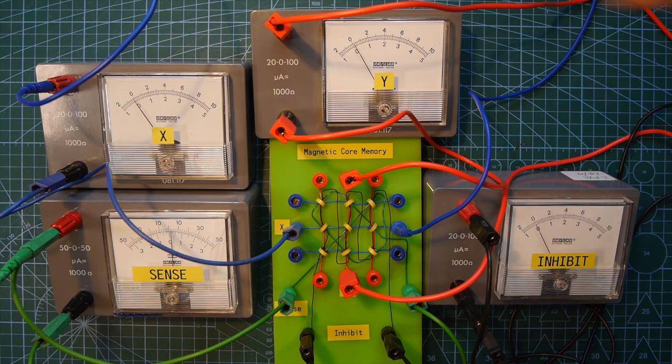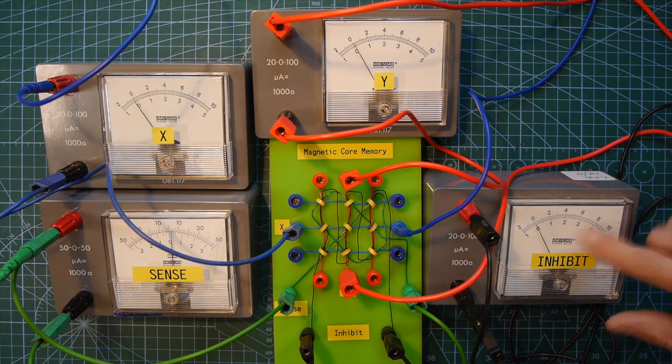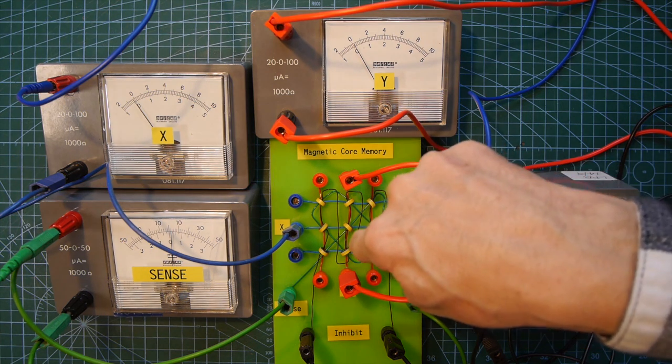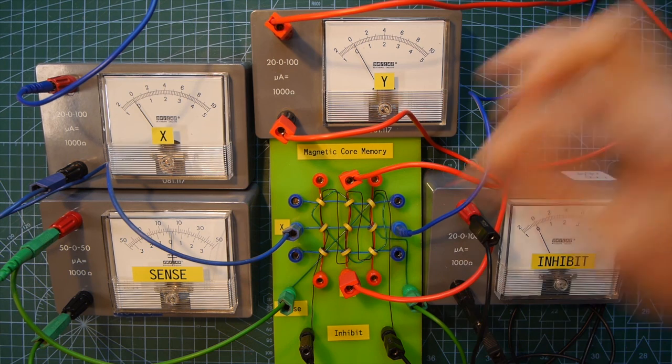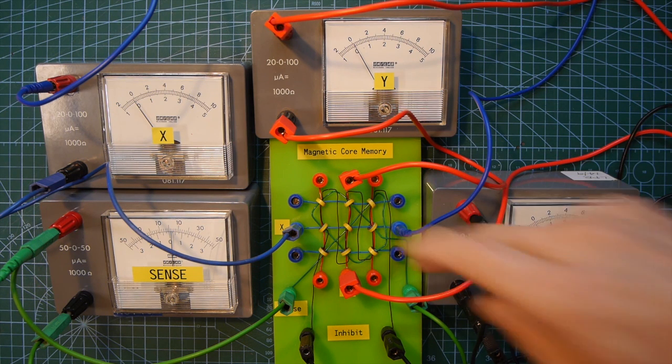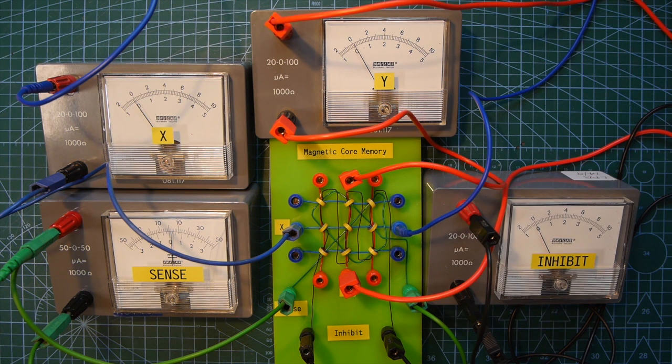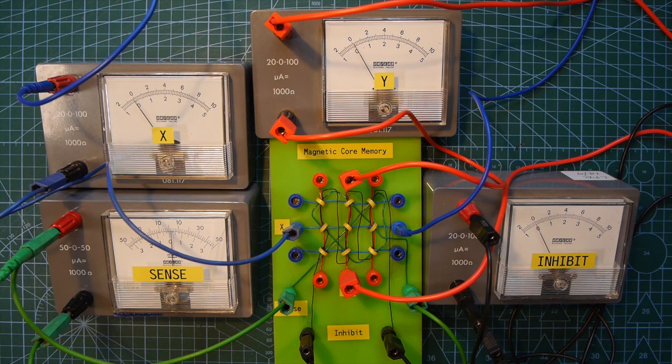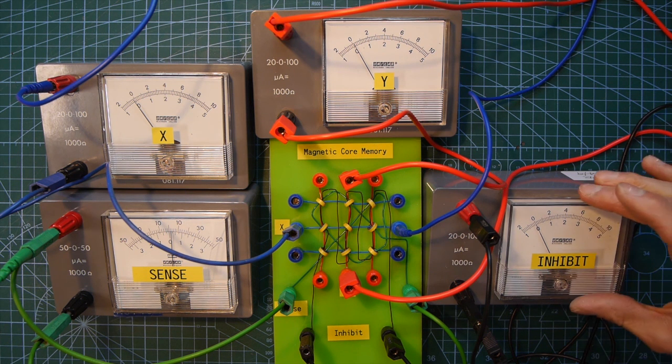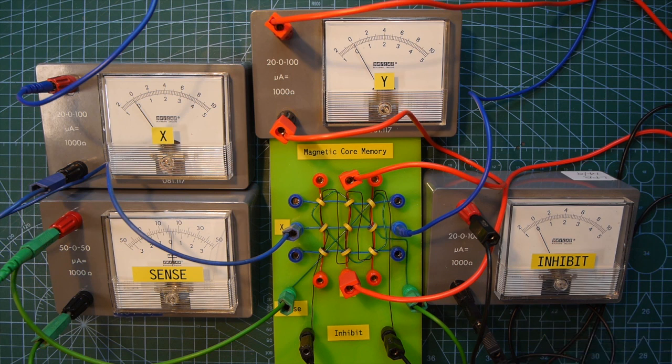So there you saw the two coincident currents, but the inverted current, the current in the opposite direction, inhibiting the write to turn that from a one to a zero. So it retains its one of data and all the other cores in the stack, the seven below, will have not had an inhibit current. So they would have all been reset to zero or kept at zero if they were at a zero state already.